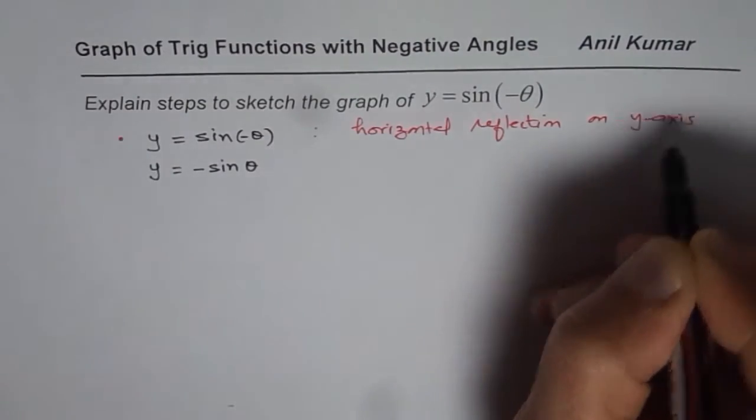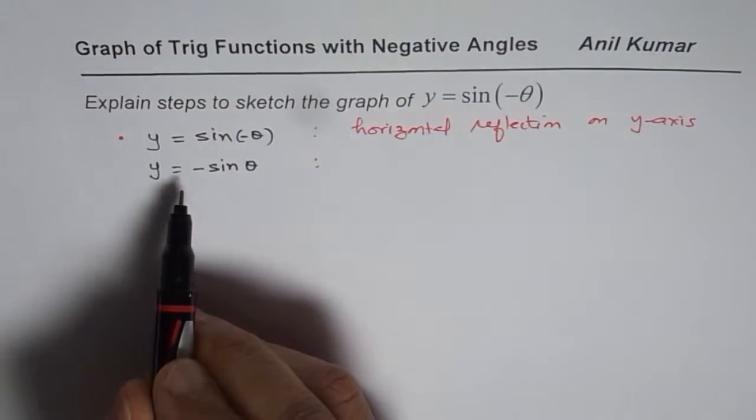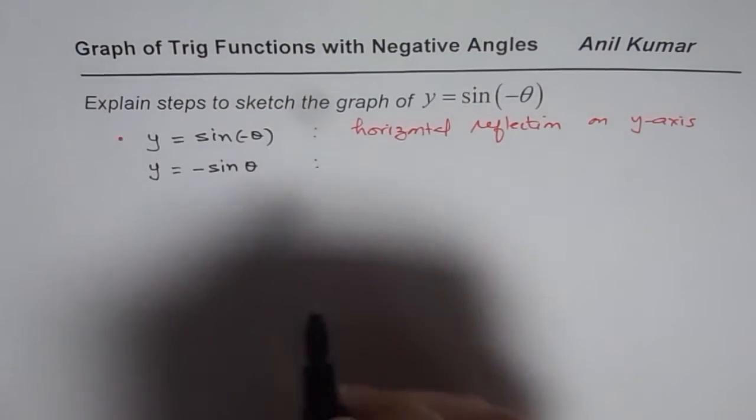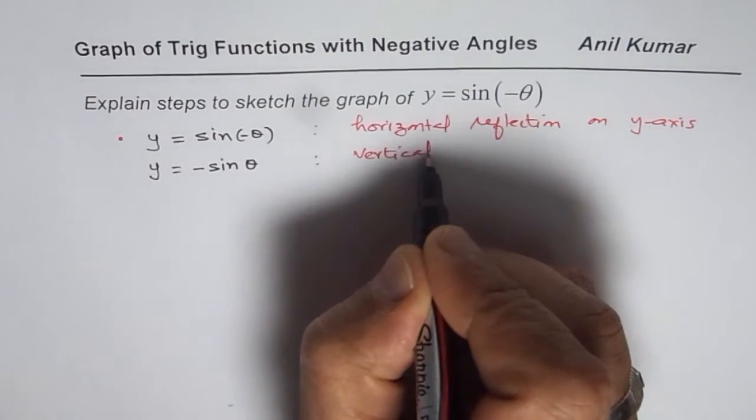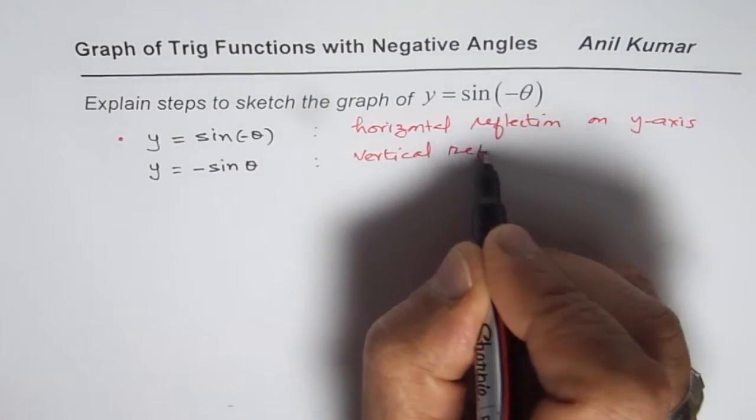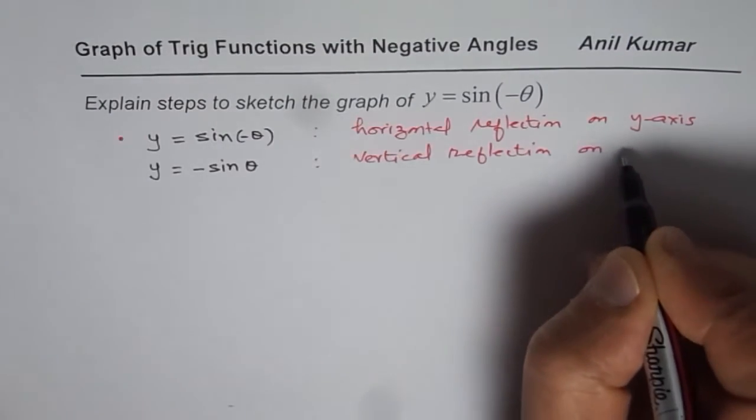But if we write this as minus of sin theta, then it becomes vertical reflection. Do you see that? Vertical reflection on x-axis.